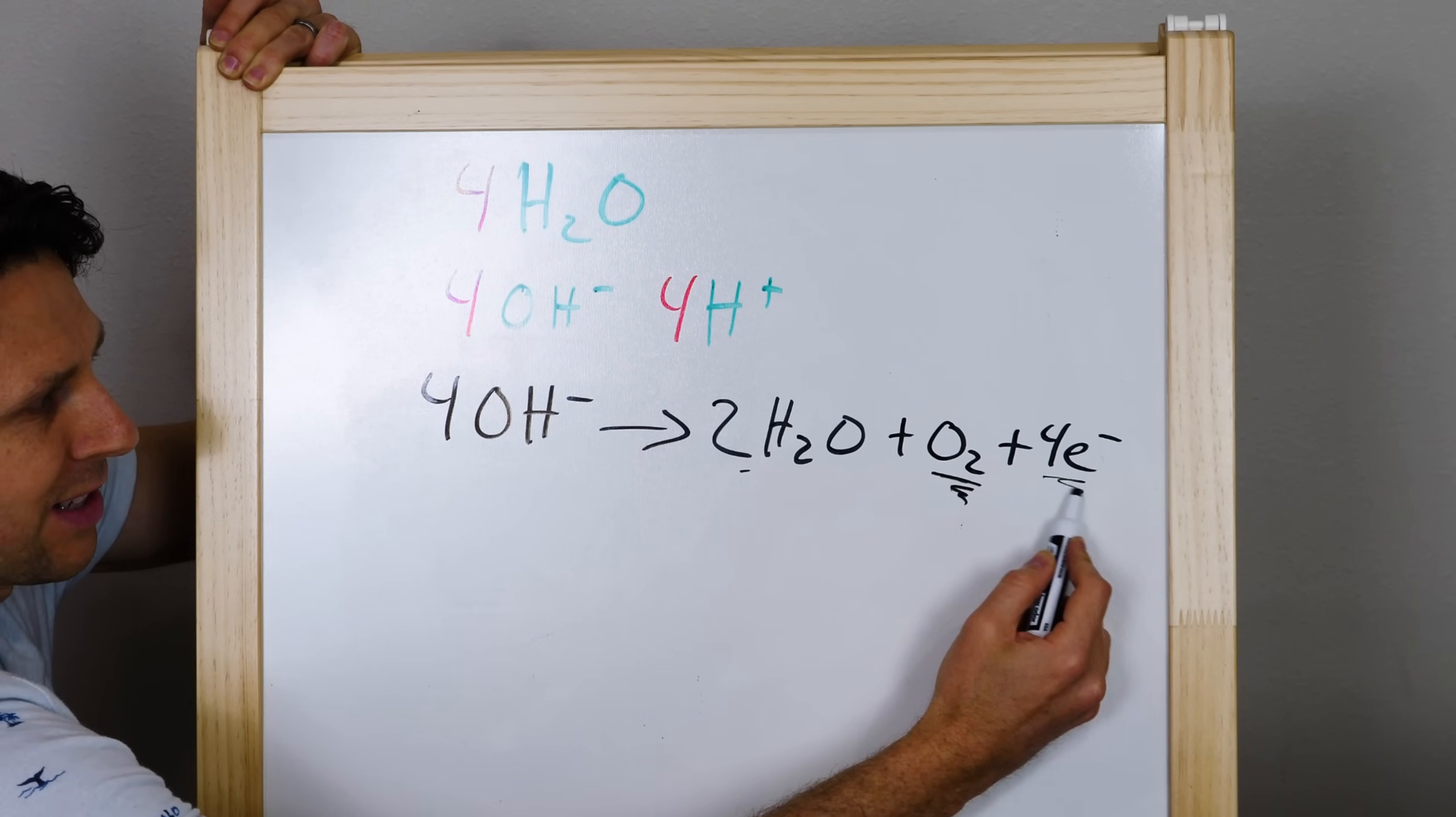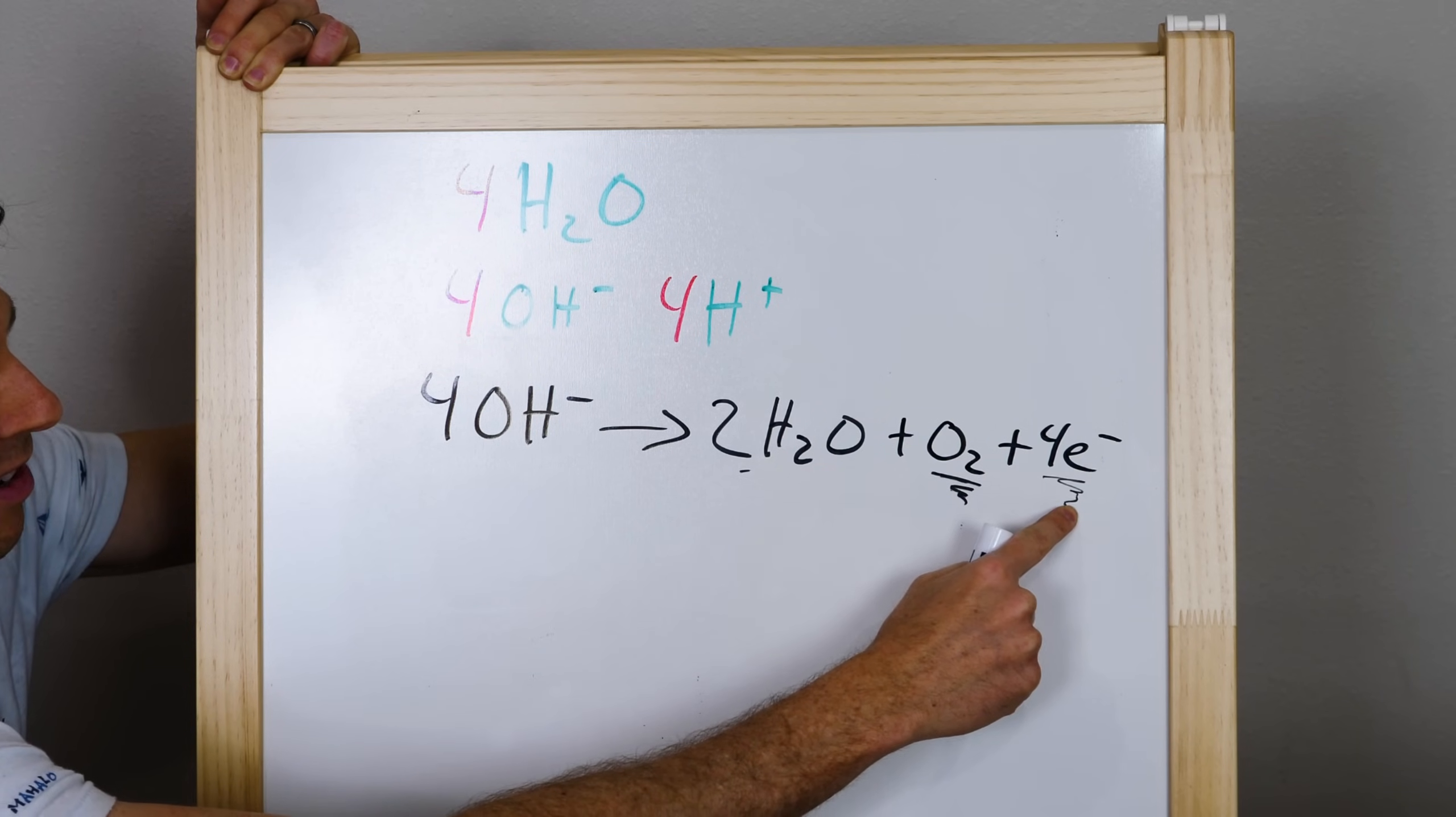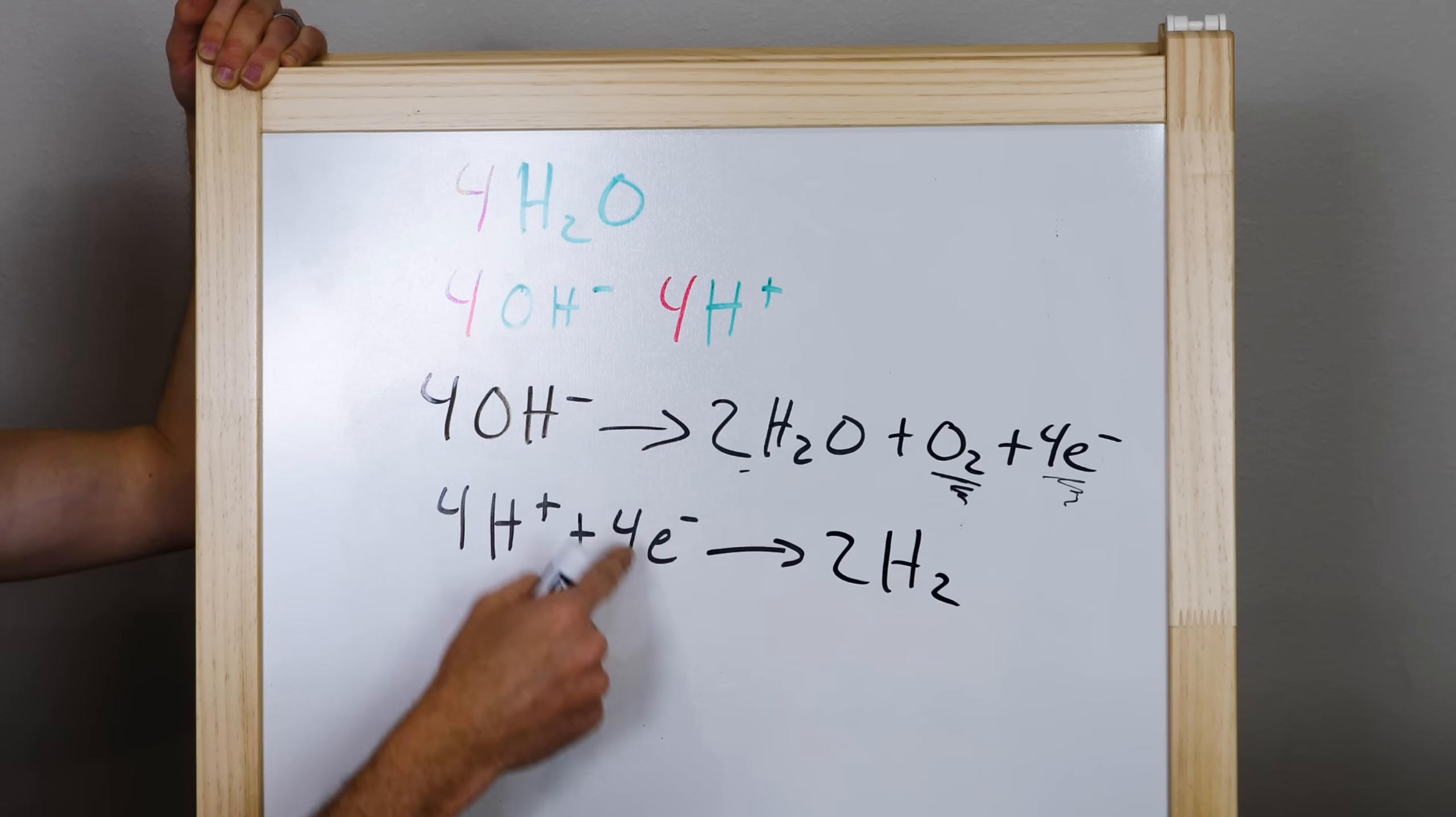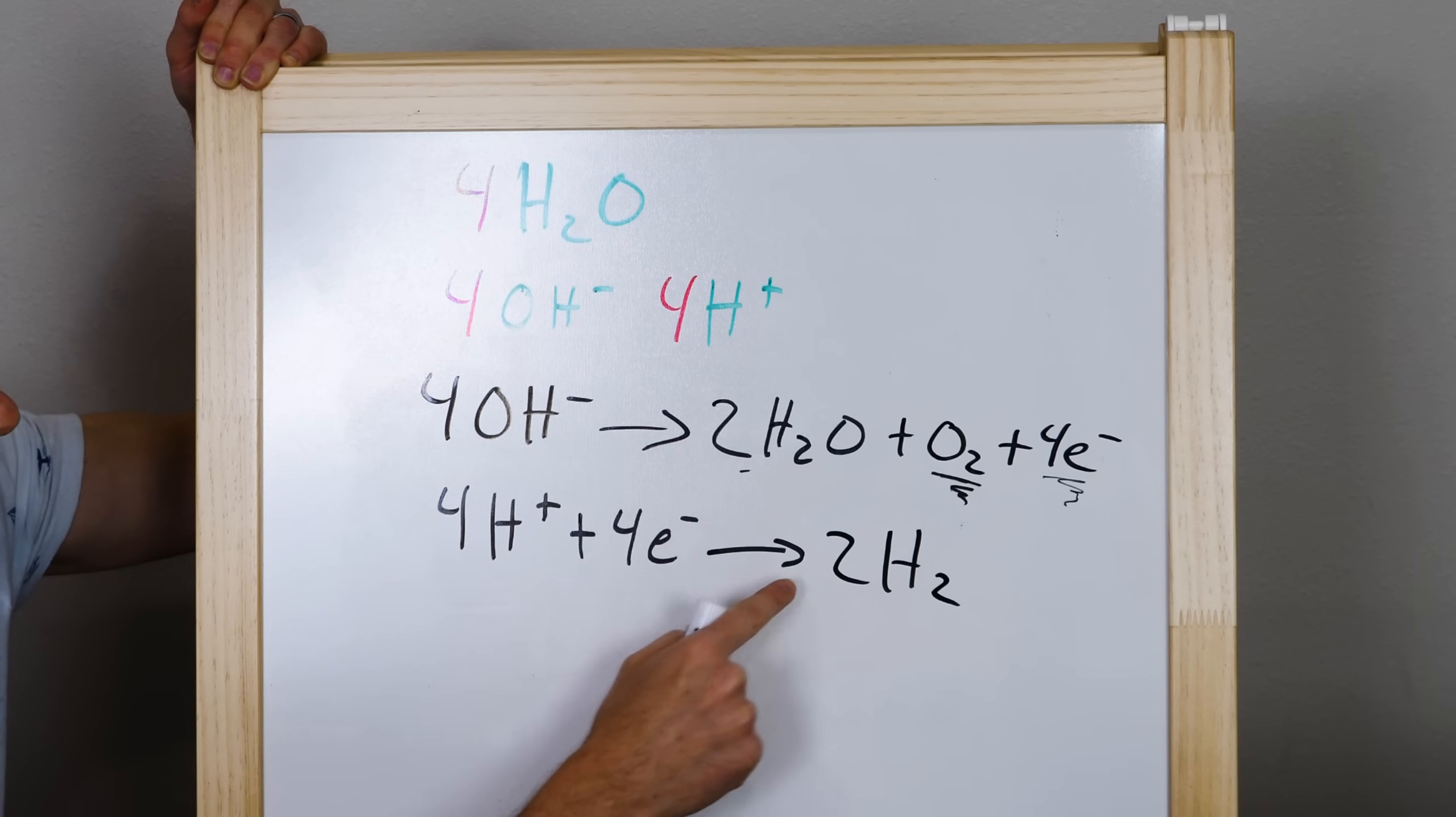And we did it by taking away these four electrons here. And what we can do with these four electrons here is now we can add them to these four hydrogens here. So if we get these four electrons and somehow add them to these four hydrogens here, then it'll form two molecules of hydrogen gas, which will bubble out of the water.